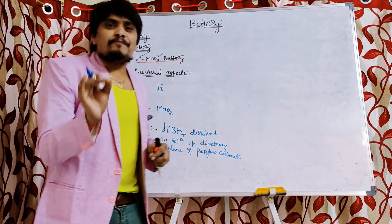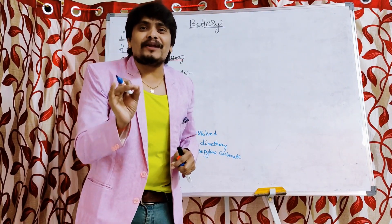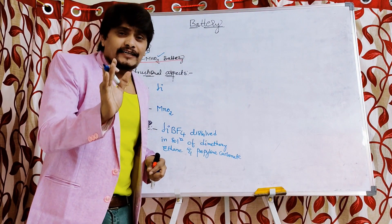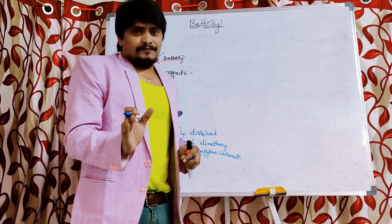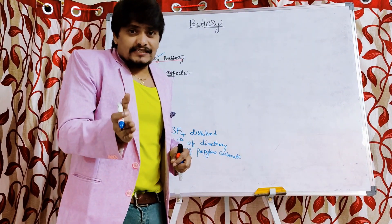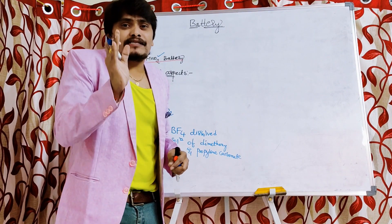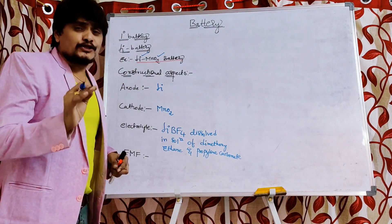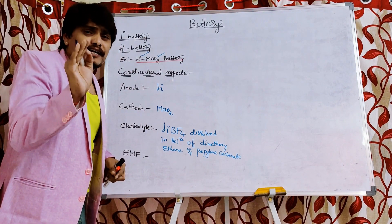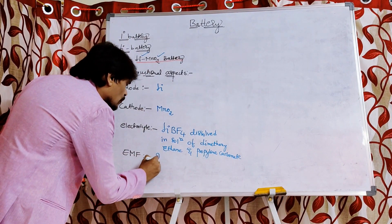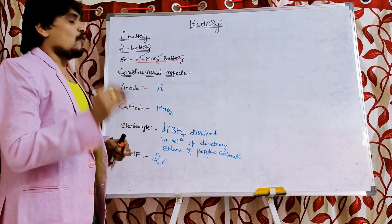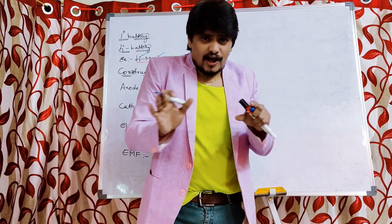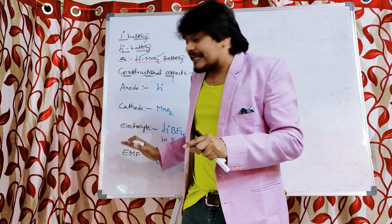So the electrolyte is lithium tetrafluoroborate dissolved in a solution of dimethoxy ethane and propylene carbonate. This completes the constructional aspects of the lithium manganese dioxide battery. The EMF produced during the functioning of this particular battery is 2 volts.